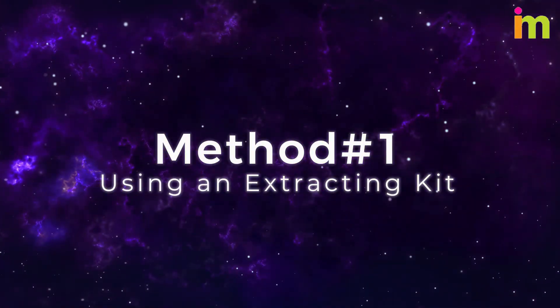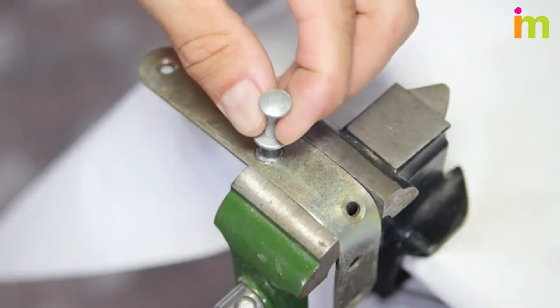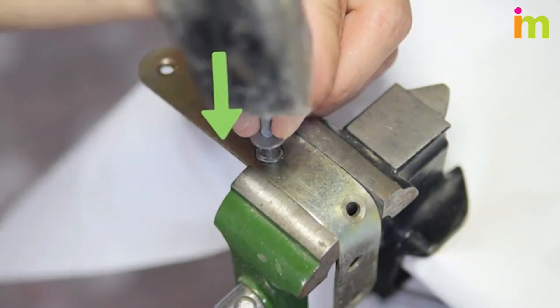Method number one: using an extracting kit. Using a hammer, mark the center of the broken bolt with a center punch.